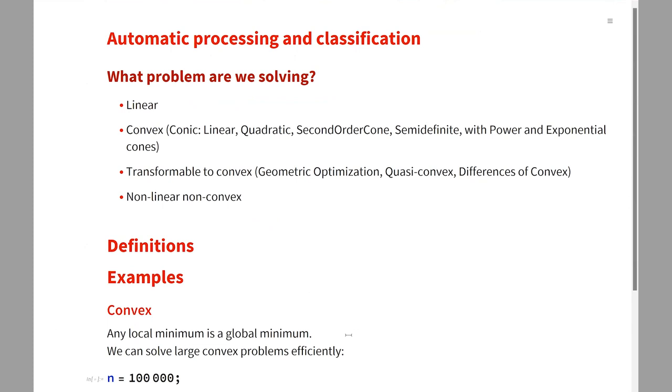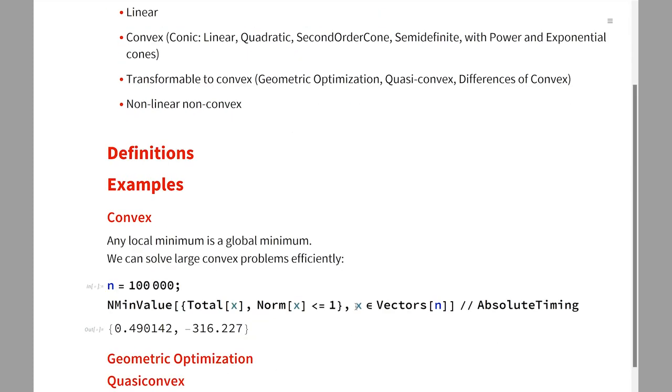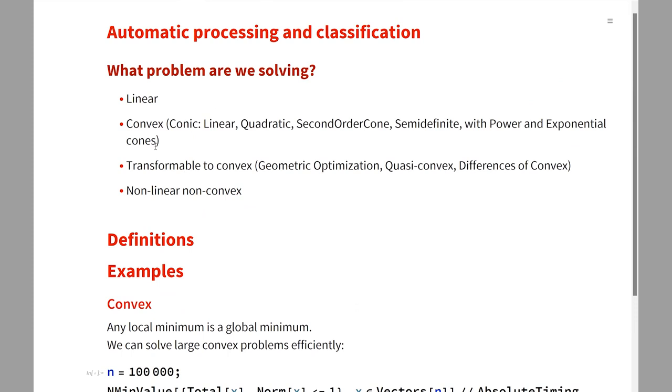The first thing that NMinimize will do internally is it will try to classify the problem. It will check all the constraints, see if they are convex or they can be converted to convex. If that process is successful, we can use a very efficient convex algorithm. If not, we go to a non-convex method.